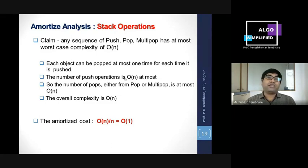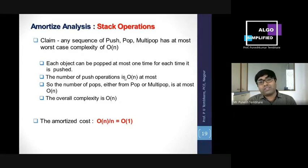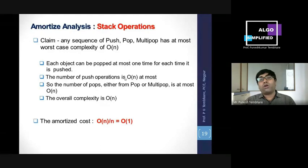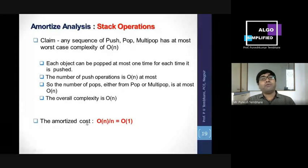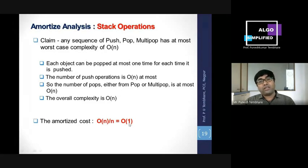So if we have amortized cost to calculate — whether push, pop, or multipop — the overall cost is O(n). Using the aggregate method, amortized cost = total worst-case time / total number of instructions = O(n) / n = O(1). That is why the amortized cost per operation is O(1). So for stack operations, when we perform amortized analysis using the aggregate method, the amortized complexity is O(1).